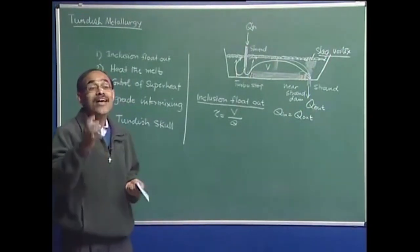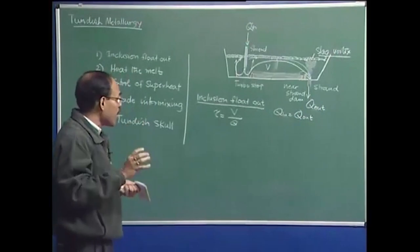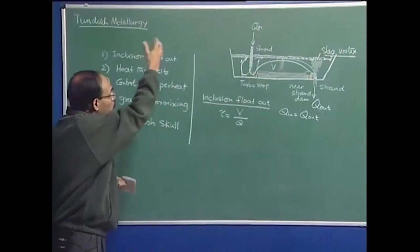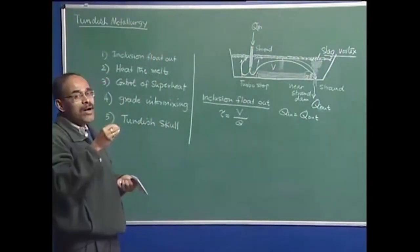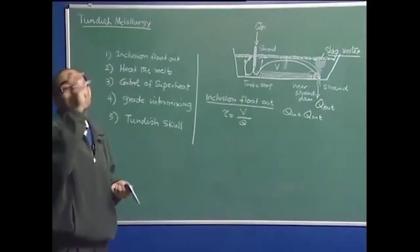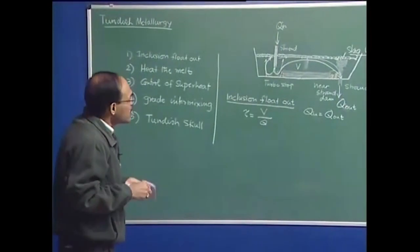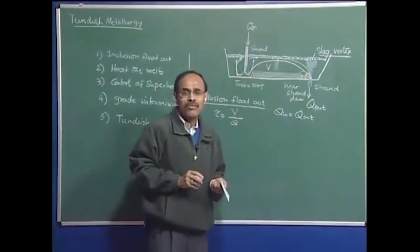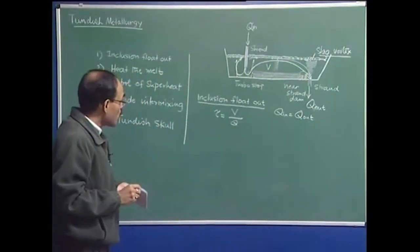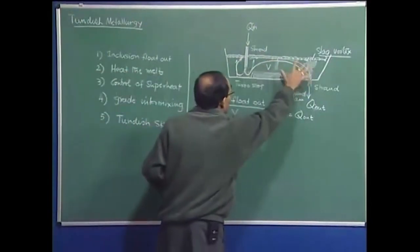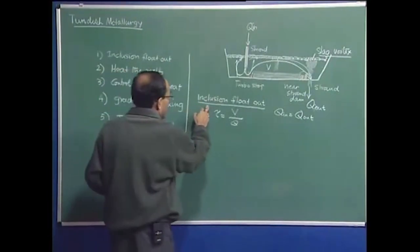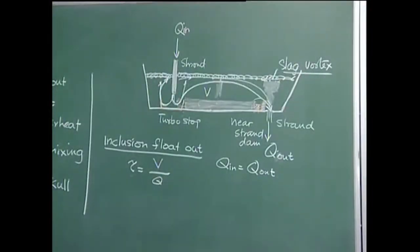In fact, there is going to be a residence time distribution, which essentially implies that the molecules or atoms of fluid coming from the ladle are not going to spend the same amount of time, but different amounts of time, giving rise to a residence time distribution. Residence time distribution is a very well investigated and documented topic in chemical engineering literature. We apply residence time distribution to find out whether the Tundish is a good enough reactor for inclusion float out.